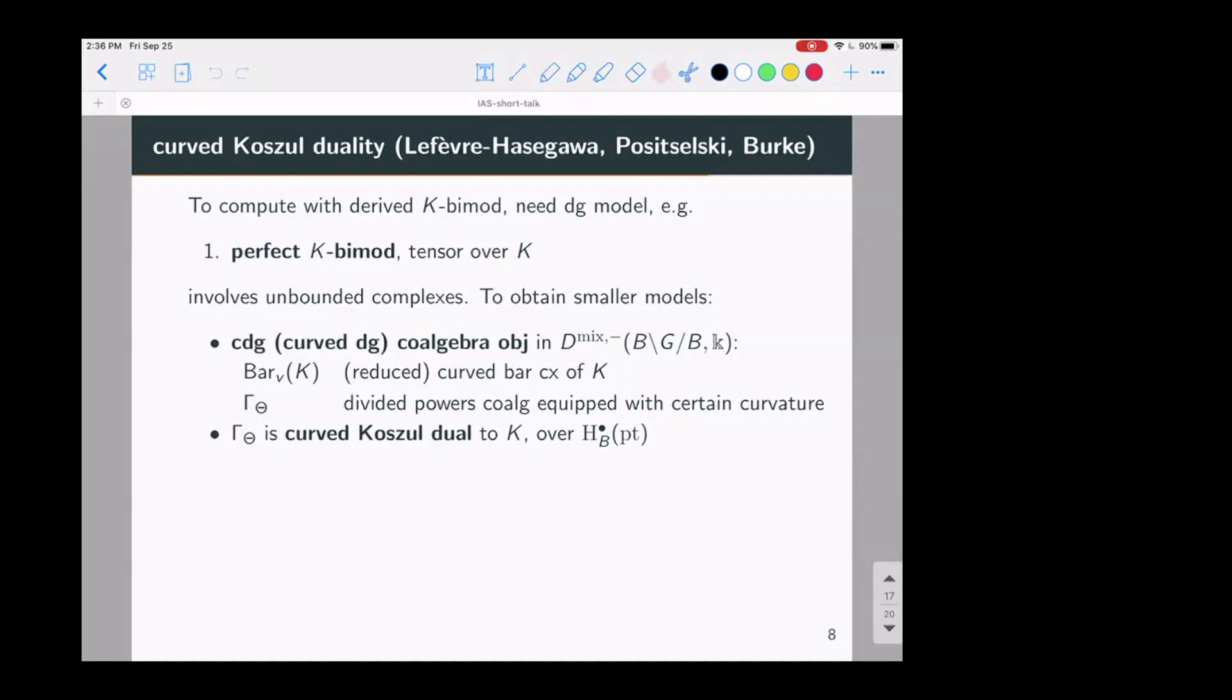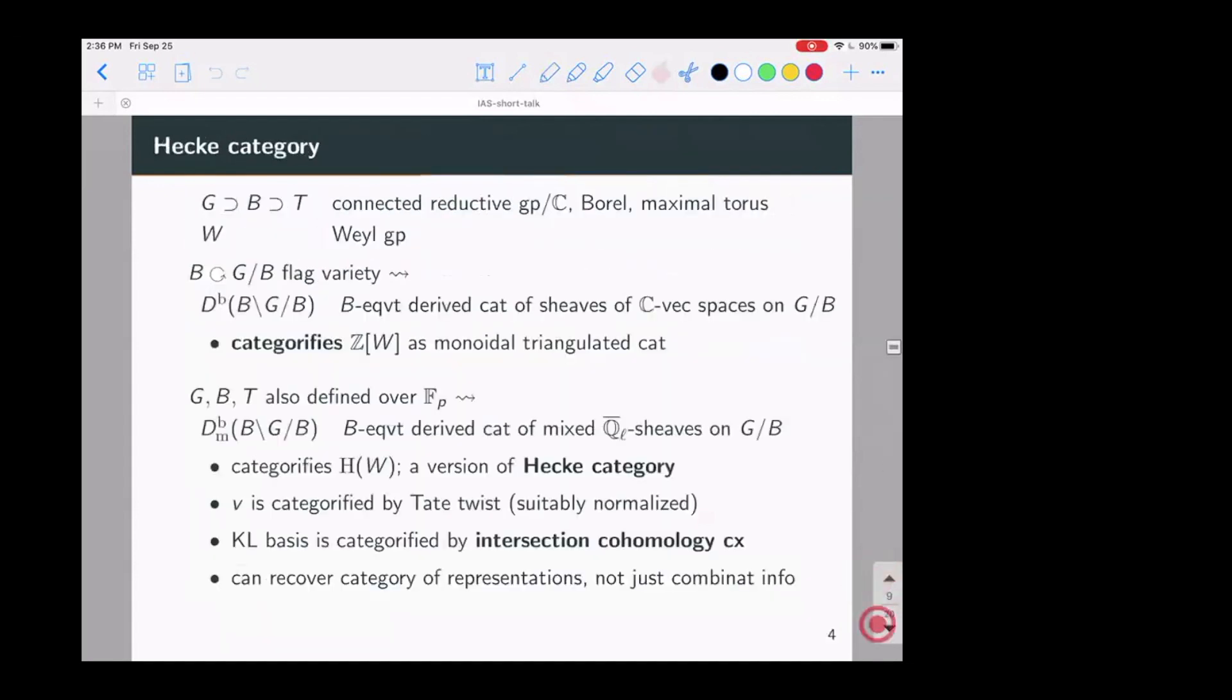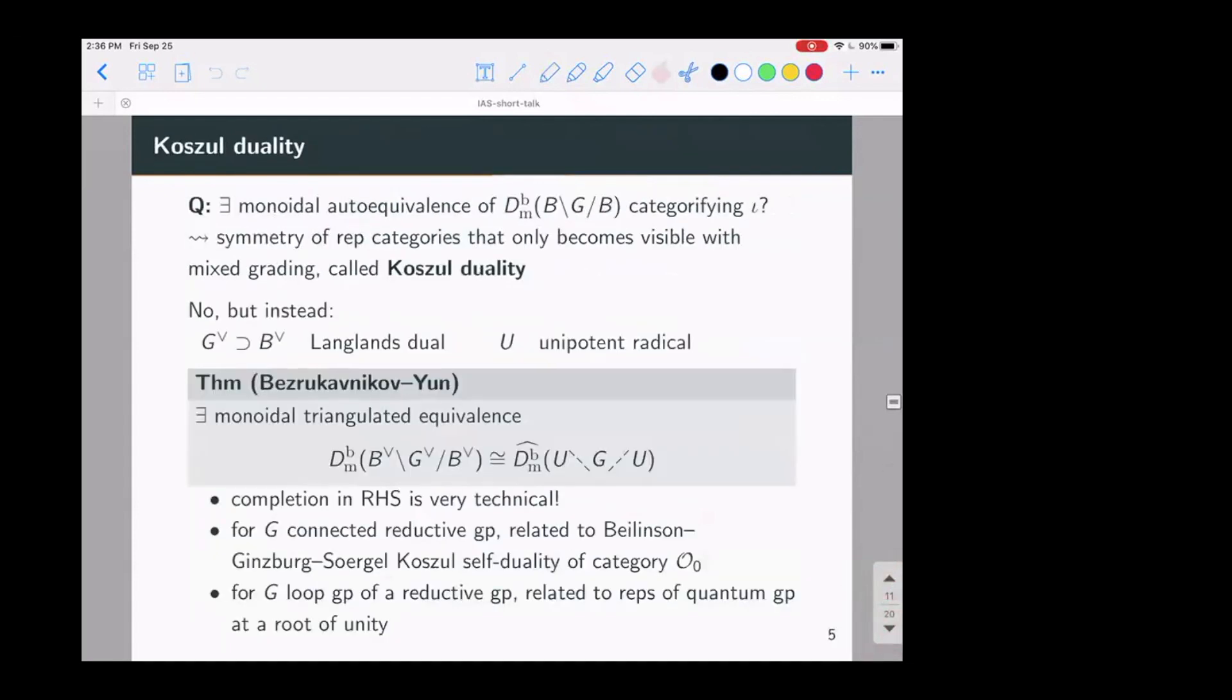In your description of this Bezrukavnikov-Yun statement. There was a your G mod U had a strange dash quotient. Well, what does that mean? So it means you start with sheaves on G mod B, and then you pull back to G mod U and you're allowed to take extensions of those things. Such objects will all have unipotent monodromy along the torus, the fiber of this map from G mod U to G mod B. And now you take some completion which adds some infinite dimensional, infinite rank local systems.